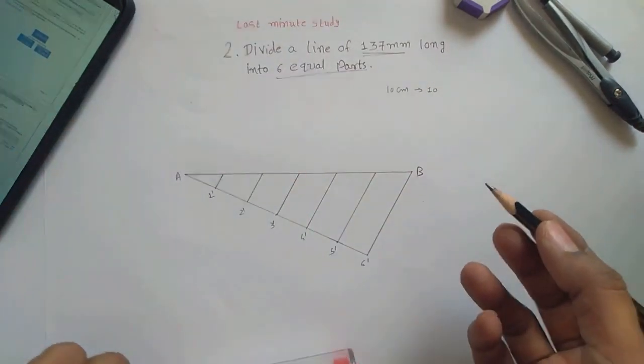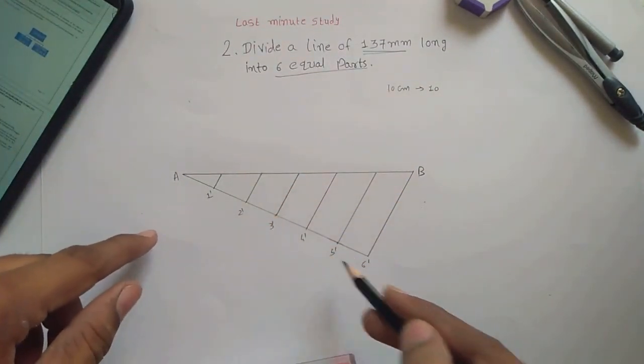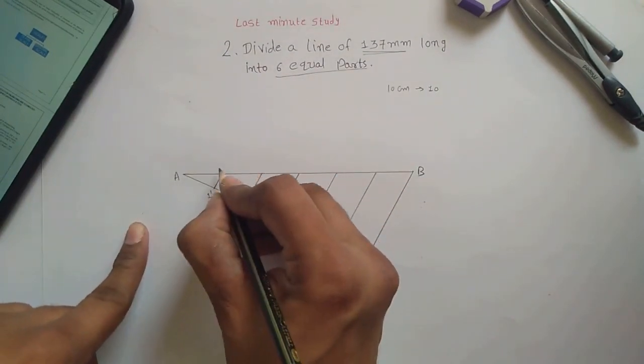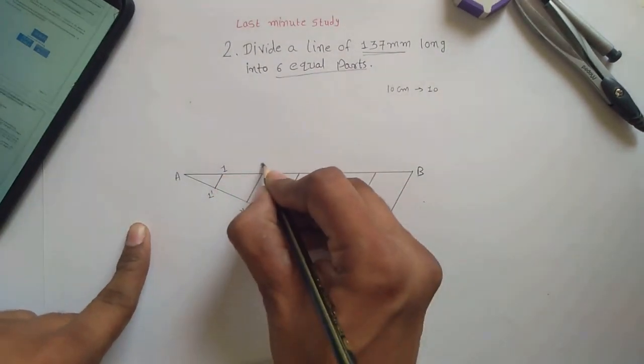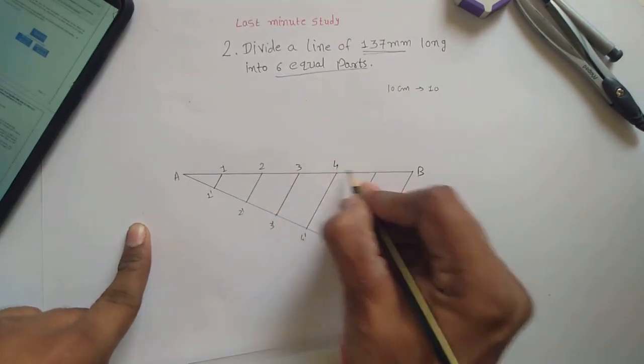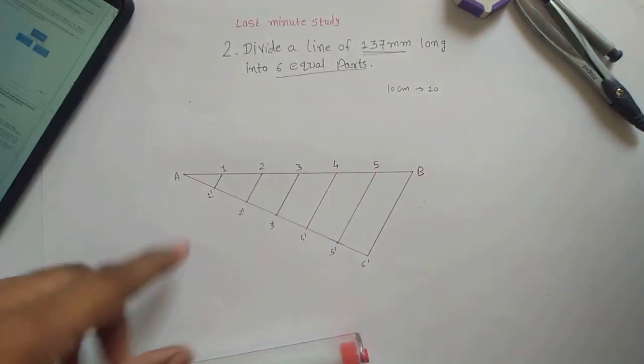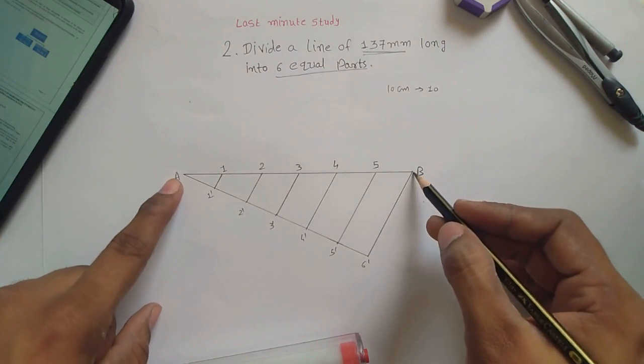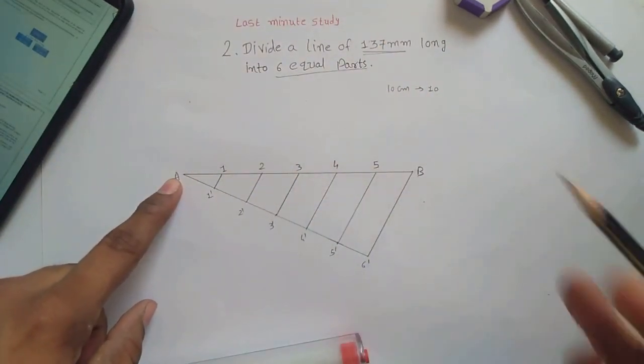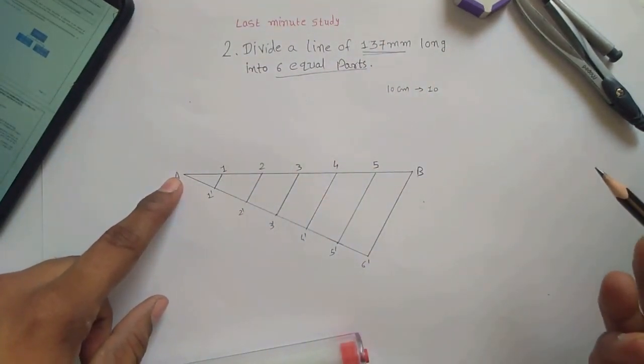So ultimately we have to transfer all the division points on our original line. So this is our 1, 2, 3, 4, 5. So I have successfully divided AB which is 137 into 6 equal parts.